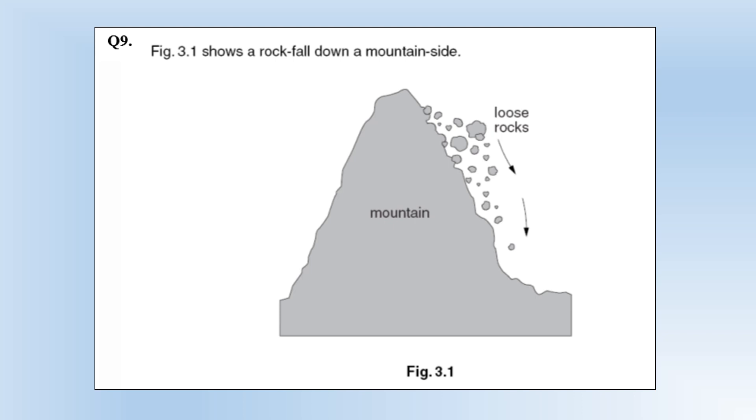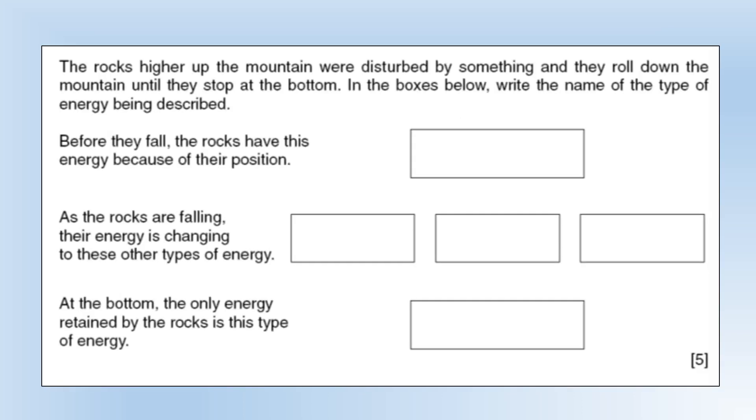The diagram shows a rock fall down a mountain side. Rocks higher up the mountain were disturbed and they rolled down the mountain until they stopped at the bottom. Write the name of the type of energy being described. Before they fall the rocks have energy because of their position - they start with gravitational potential energy. As the rocks are falling their energy is changing. They're moving so we've got kinetic energy. We're always producing heat so that's an easy one, and they're also going to make a noise as they're colliding with the sides of the mountain so we can make some sound energy as well. At the bottom the only energy retained by the rocks is thermal. All energy ends up as thermal energy eventually.